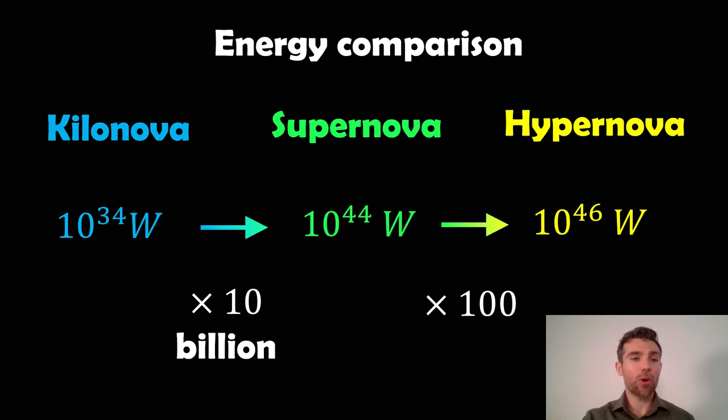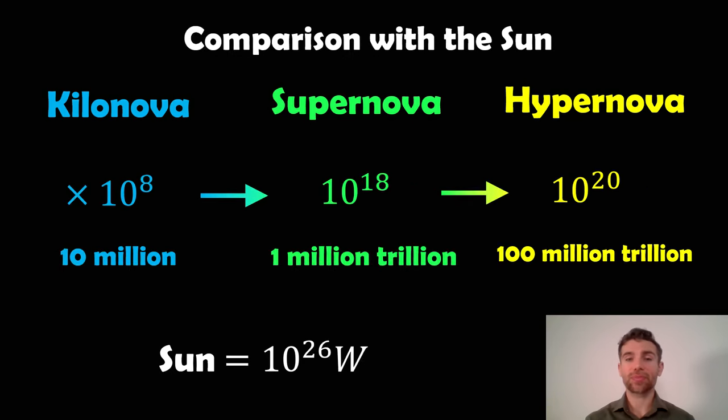Finally, just to compare to the sun, because we can see the sun every day, it gives us a good reference point. The sun's quite powerful, we know that, we can feel that ourselves here on the planet. But to compare that to these explosions really puts it into context. A kilonova has about 10 million times more energy than the sun. Supernova, a million trillion. And then a hypernova could be a hundred million trillion times that of the sun. These are enormous amounts of energy, and this is why we can see them at such massive distances because they're just so powerful.